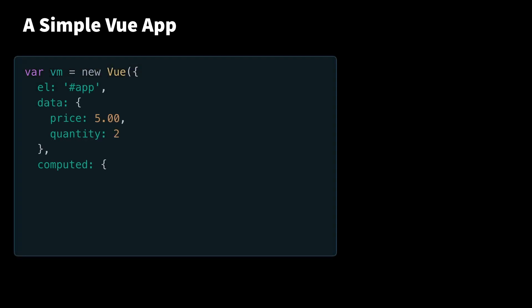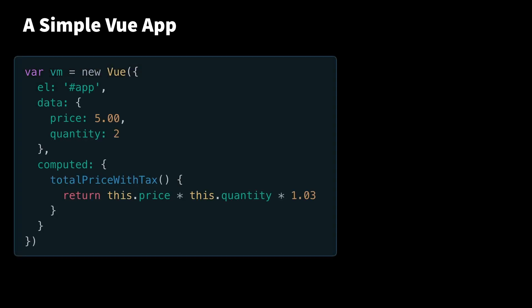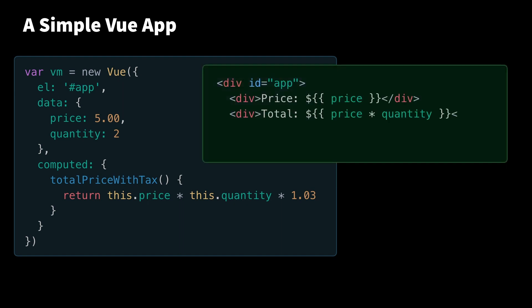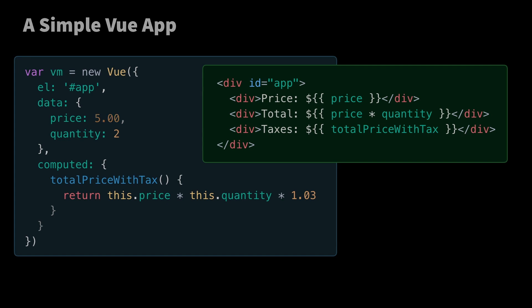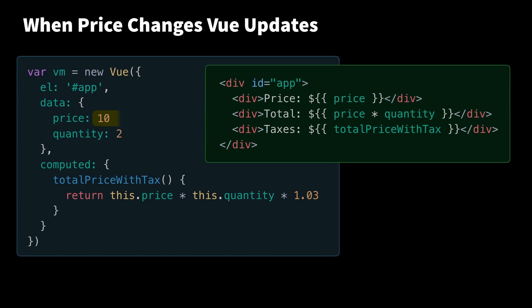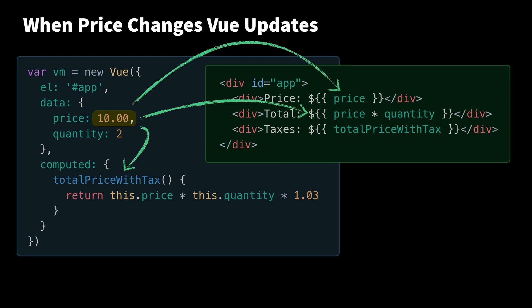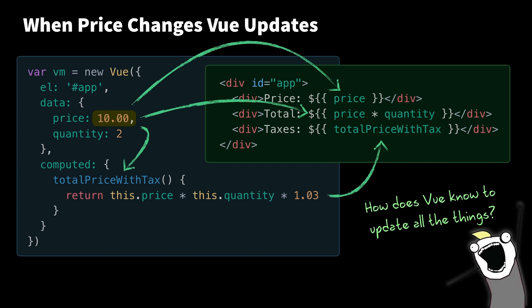Here is a simple Vue application. You can see we have data, we have computed, and here's the template that goes along with this simple Vue app. Now Vue somehow knows that when our price updates, we want to update that here in the template and here in the template, as well as this computed property is going to get updated, which is going to update it over here in the template. So the question is, how does Vue know how to update all the things?